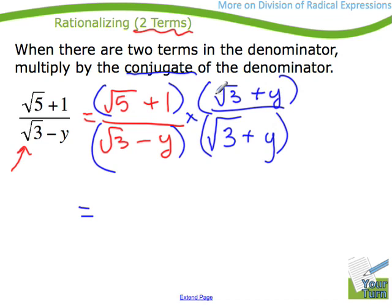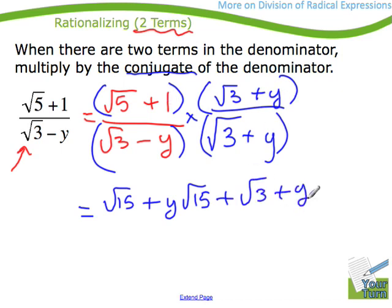So here I've got root 5 plus 1, and I'm going to have to multiply it by this. And on the bottom, I'm going to have to do the same thing. Looks like a whole lot of multiplication of radicals. Right on, I'm in. So let's foil the top. Root 5 times 3 is root 15. Root 5 times y would just be plus y root 15. 1 times root 3 would just be a plus root 3. And 1 times y would just be a y.